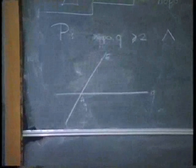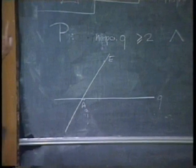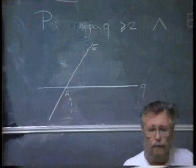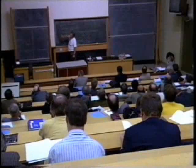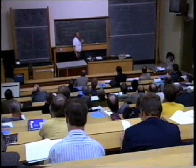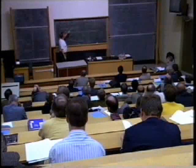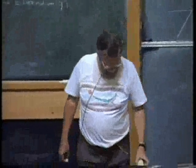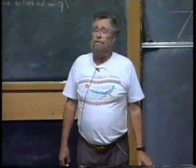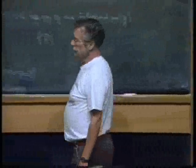We have to think about a termination argument. In the original statement of the theorem, we have a finite number of points. This means that our state space, which consists of a Q and an E, has a finite number of possible values for Q, and for each value of Q, there is a finite possible number of values for E. It is in this finite space that we have to find a termination argument.